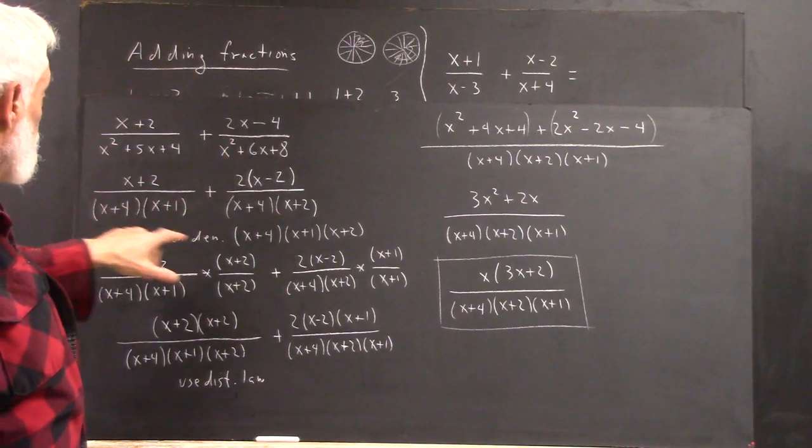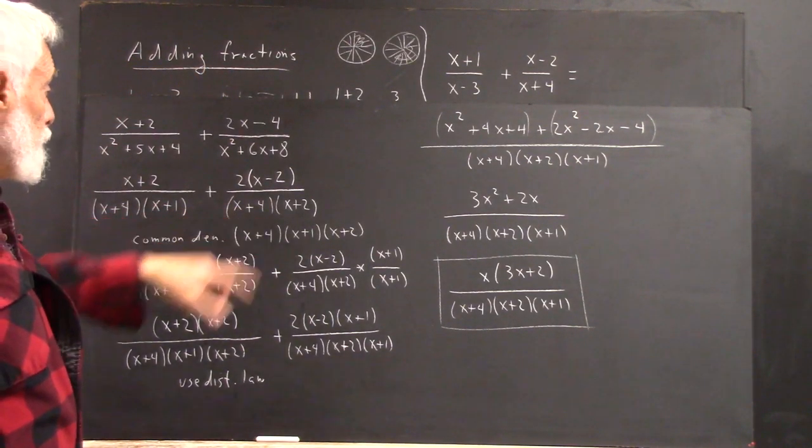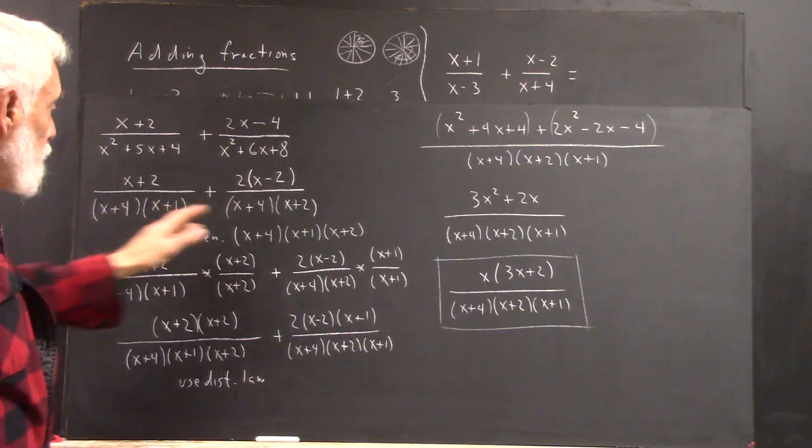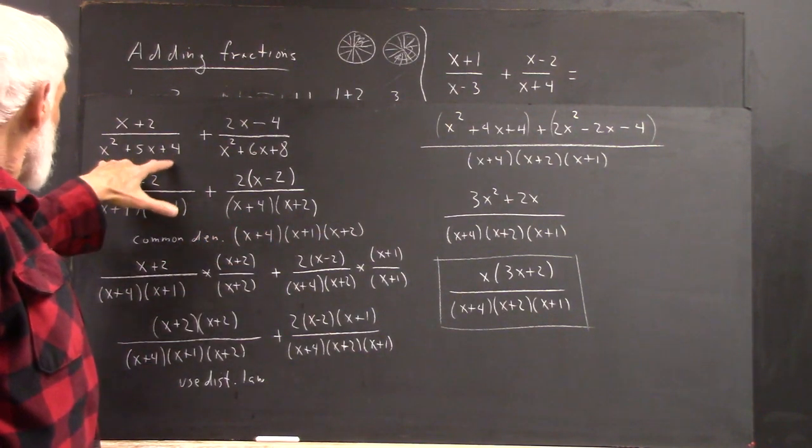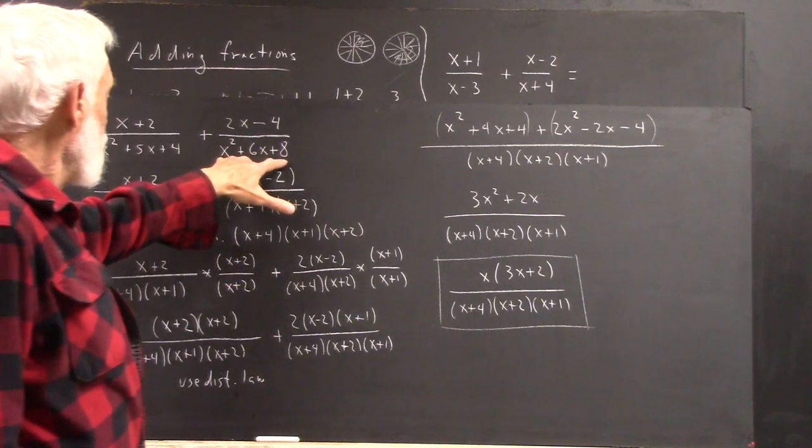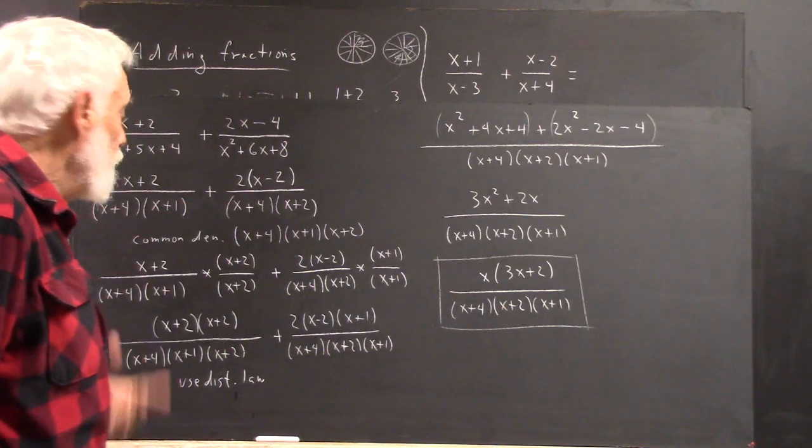Before we can add these, we want to put both fractions in completely factored form, which we do here. This factors to this, this factors to this, and those are simple factoring.